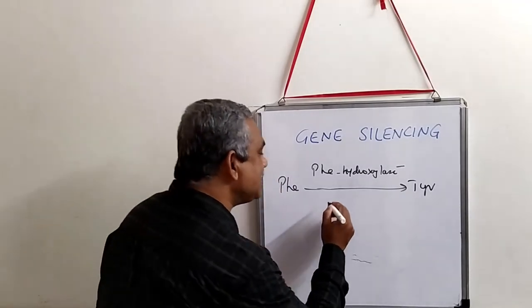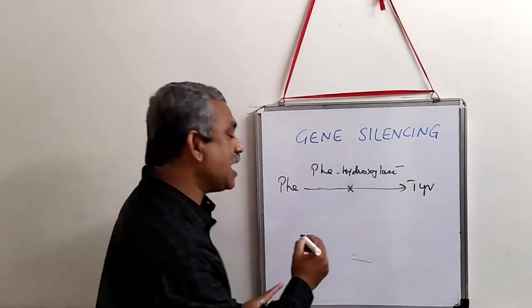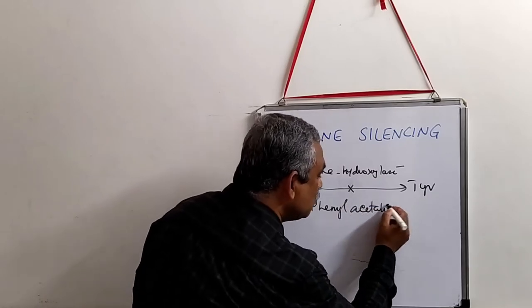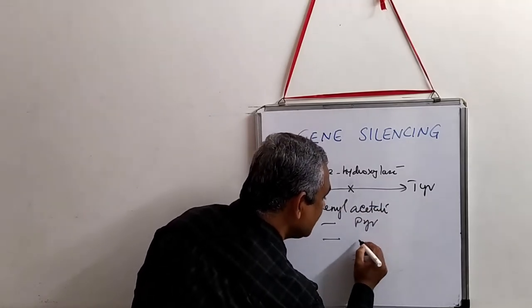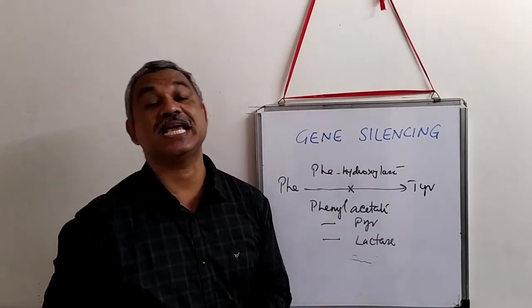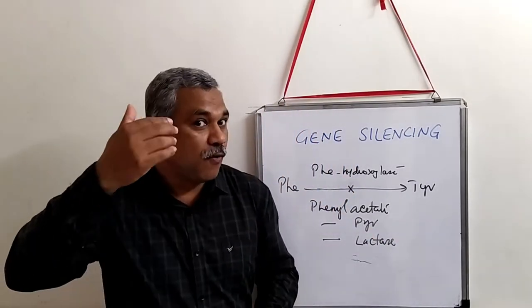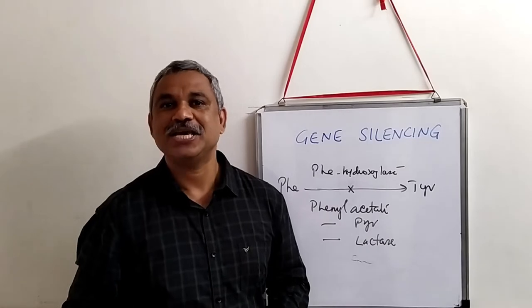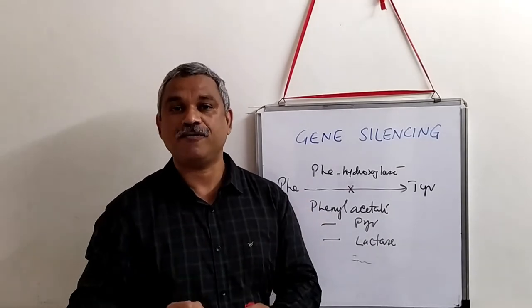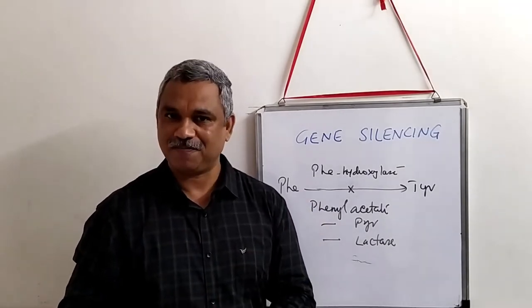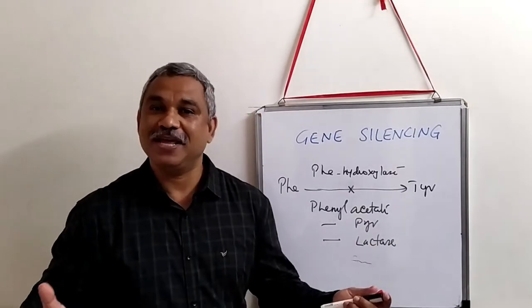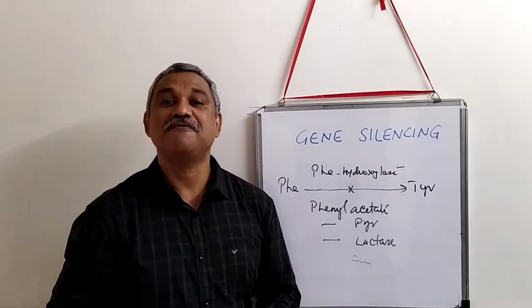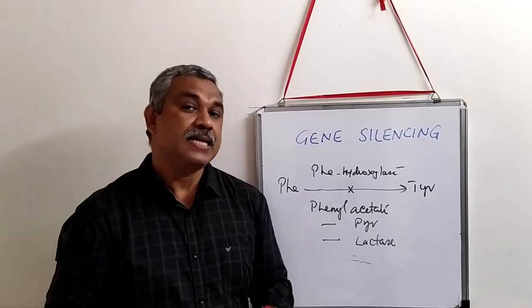Phenylalanine cannot be converted to tyrosine, and the products and intermediates that will get accumulated are phenyl acetate, phenyl pyruvate, and phenyl lactate. All these intermediates get accumulated. Therefore, by silencing a particular gene or creating mutants is an effective way of understanding metabolic pathways. You are aware that this is a very important metabolic disorder known as phenylketonuria.